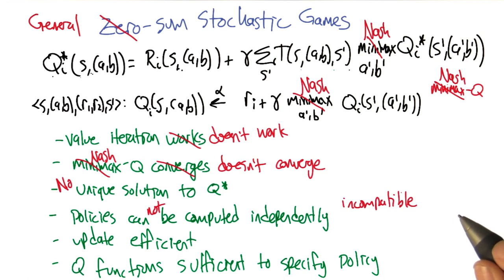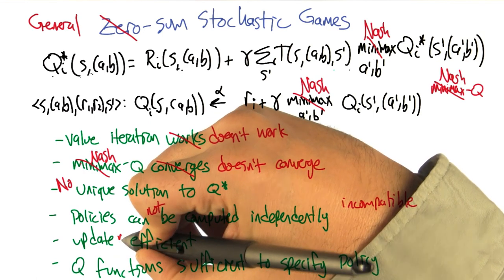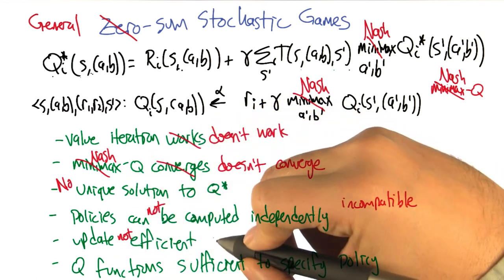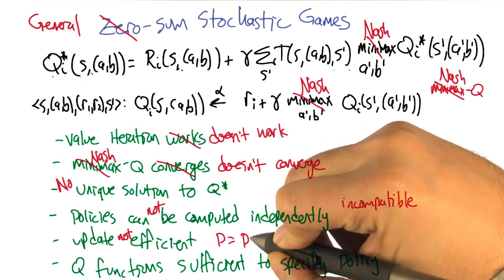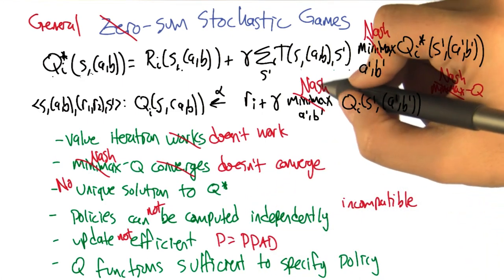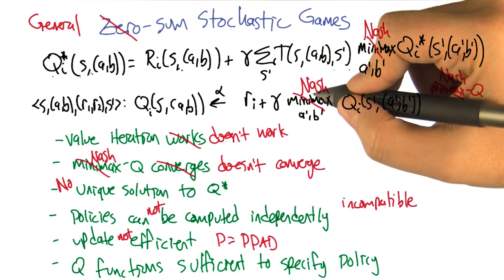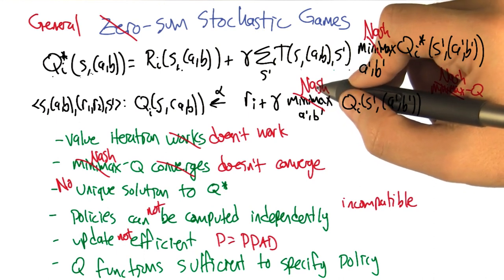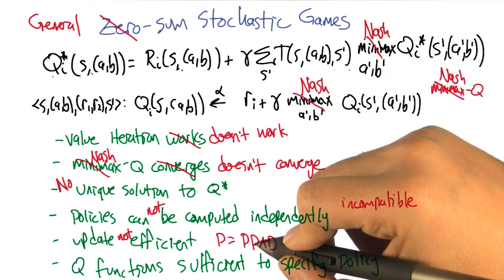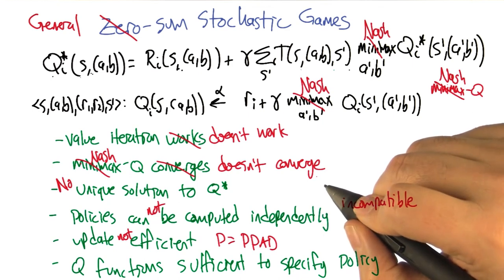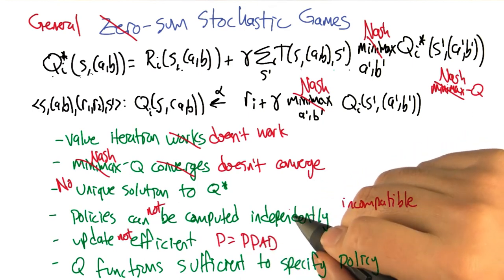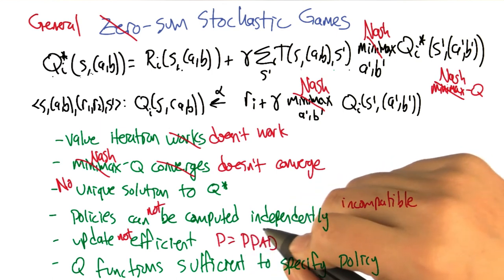So far so good, right? Yeah. I can't wait to see what happens next. The update is not efficient unless P equals PPAD, which is to say computing a Nash equilibrium is not a polynomial time operation as far as we know. It is as hard as any problem in a class that's known as PPAD. And this is actually a relatively recent result in the last five to ten years. And this class is believed to be as hard as NP, so possibly harder.